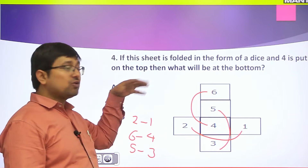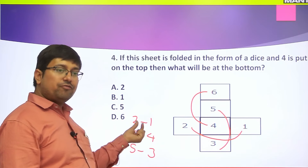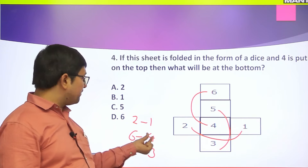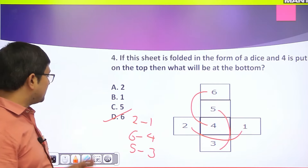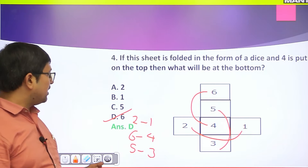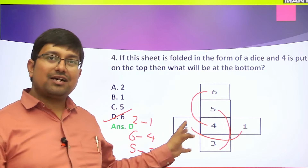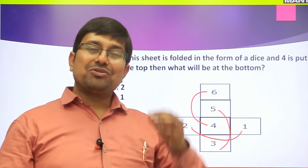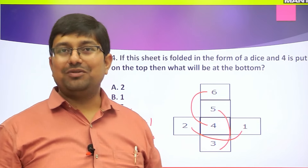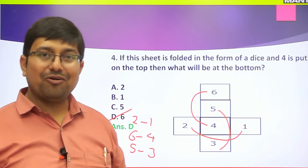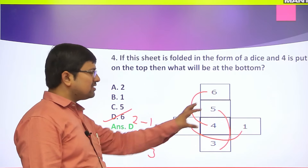If four is put on the top, what will be at the bottom? Since four and six are opposite, the answer is option D, that is six. The rule to remember: alternating faces in the open net will be opposite to each other.